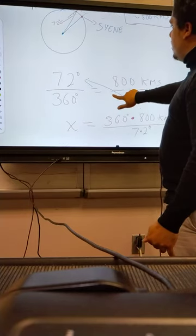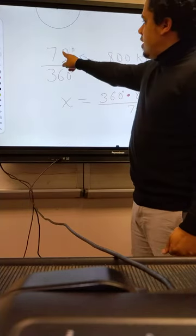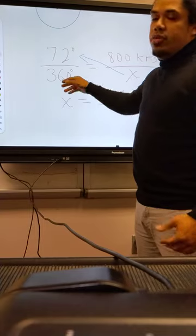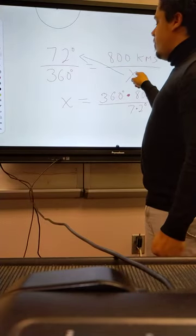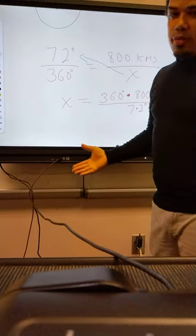What he did basically was 7.2 degrees over 360 equals 800 kilometers over x. By solving for x...